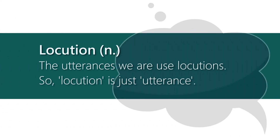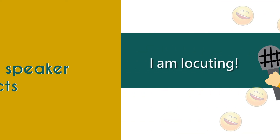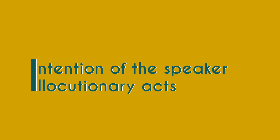The utterances we make are locutionary — as an adjective, they are locutions. What you say are locutions. We could even use it as a verb: 'Are you speaking? No, I'm locuting.' Most locutions — meaning most utterances — express some intent. Why do you utter words? Because you have an intent. When a speaker has an intent, the act becomes illocutionary with an illocutionary force.